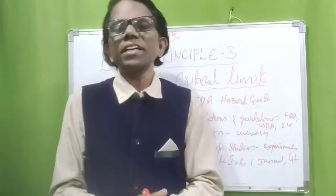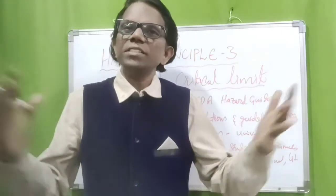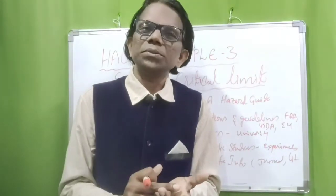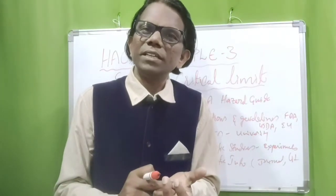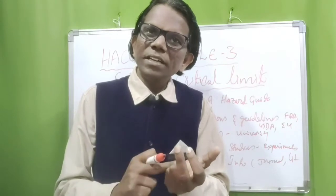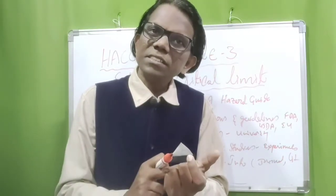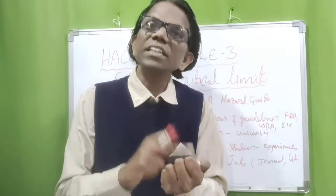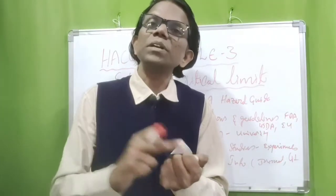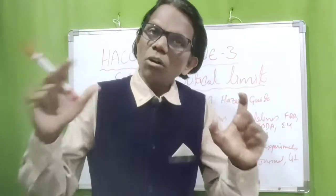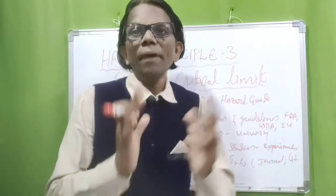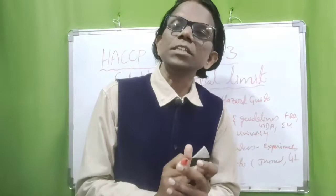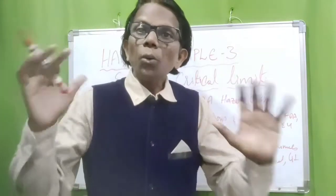In this chapter we will discuss the definition of critical limits, how to determine critical limits for each CCP, the difference between critical limits and operating limits, and how to use the HACCP plan form. Now, the definition of critical limits: it is a maximum or minimum value at which a CCP must control biological, chemical, or physical hazards, reduced, prevented, or eliminated to an acceptable level.